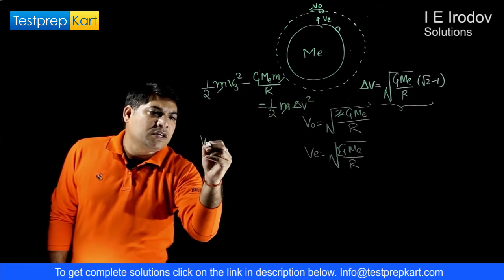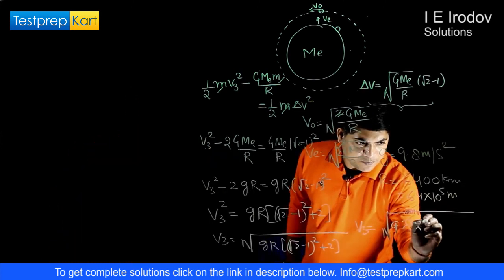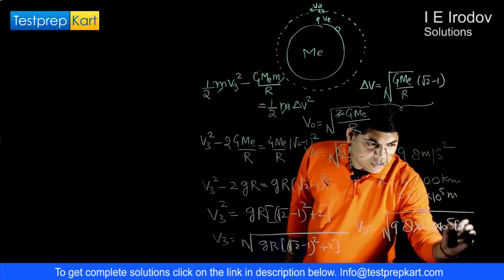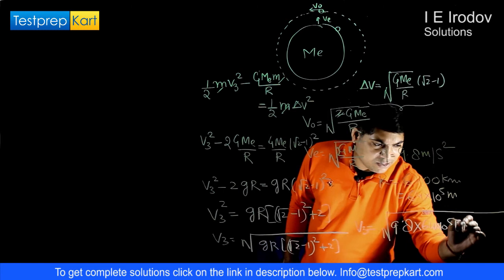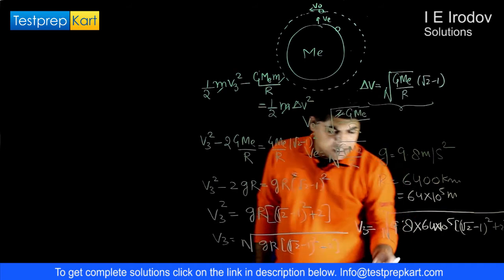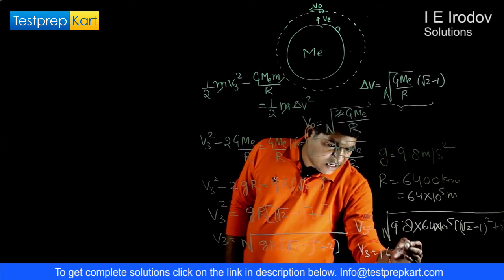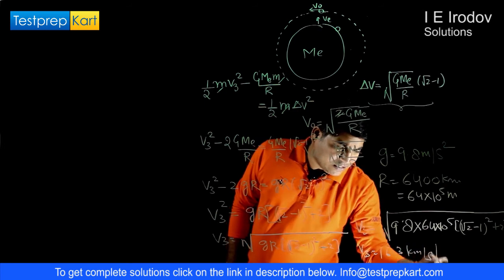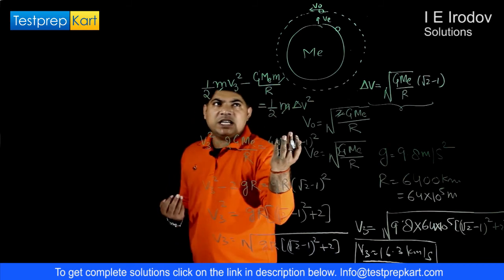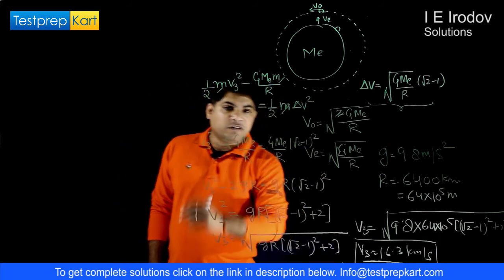Proceeding with the calculation using 9.8 × 64 × 10⁵, and the term (sqrt(2) − 1)² + 2, we approximately get 16.3 kilometers per second. This is the velocity required to escape the object from the solar system's gravitational pull — that is called the third cosmic velocity.